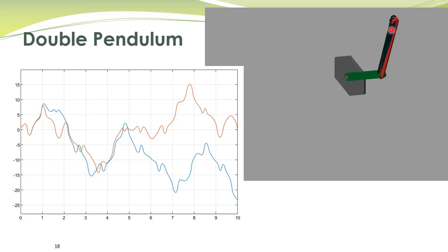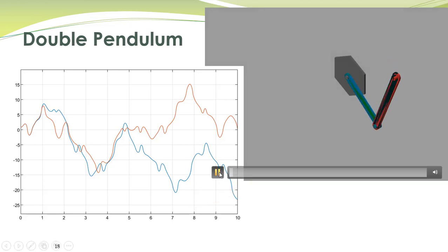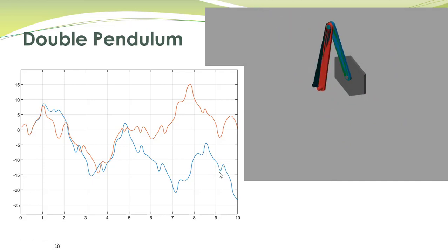With almost similar initial conditions. So since both of the double pendulums have almost similar initial conditions, the second one is not visible. Let's see the simulation. So here you see you have two double pendulums.